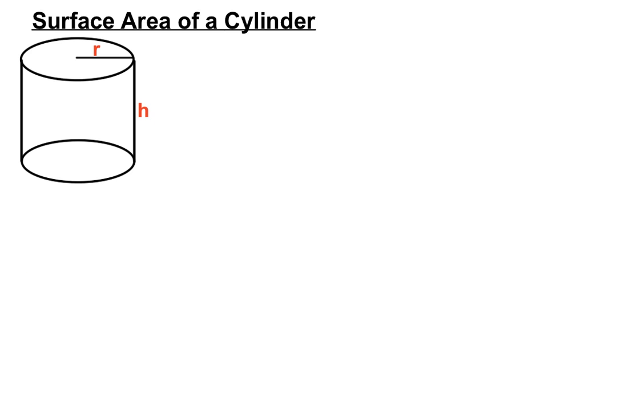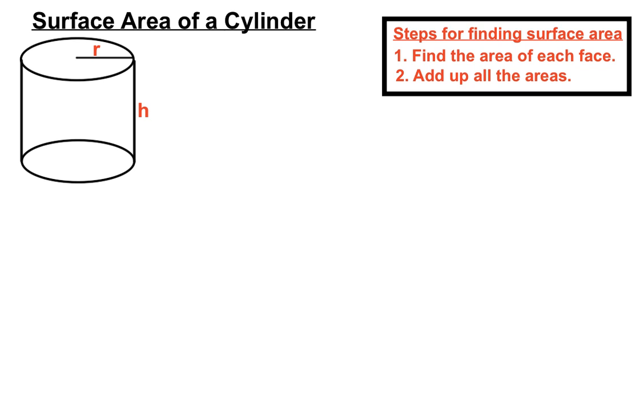Okay, here we have a cylinder. Now you'll notice there's a circular shape on the top and a circular shape of the same size on the bottom, and we'll have a curved section around the middle there. We'll have a radius and we'll have a height, so let's find the area of each face.